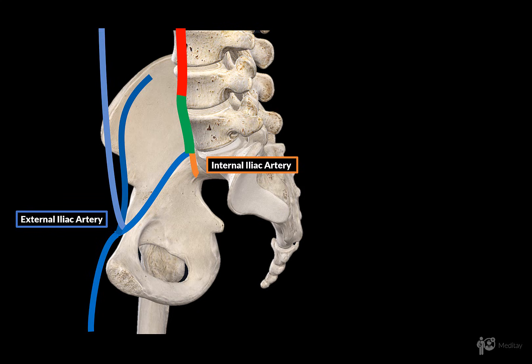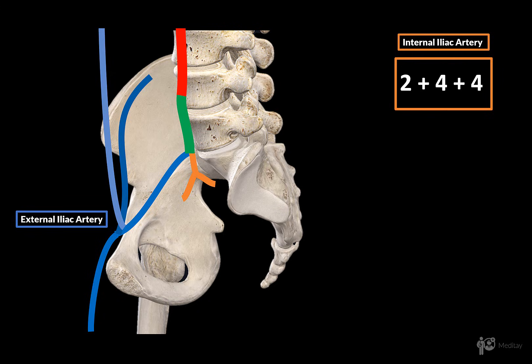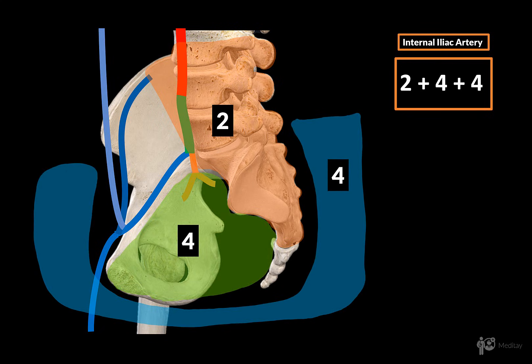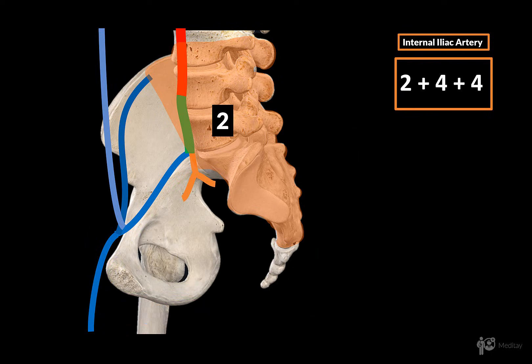The internal iliac artery will travel along the lateral wall of the lesser pelvis, and then split into two divisions. There are typically 10 branches of the internal iliac artery, and if you know these 10 you'll be fine for almost any conceivable purpose. A simple scheme for remembering them is to remember the numbers 2 plus 4 plus 4: that gives you 2 to the back body wall, 4 leaving the pelvis entirely, and 4 to the pelvic viscera. So let's first look at the two branches going along the posterior body wall.